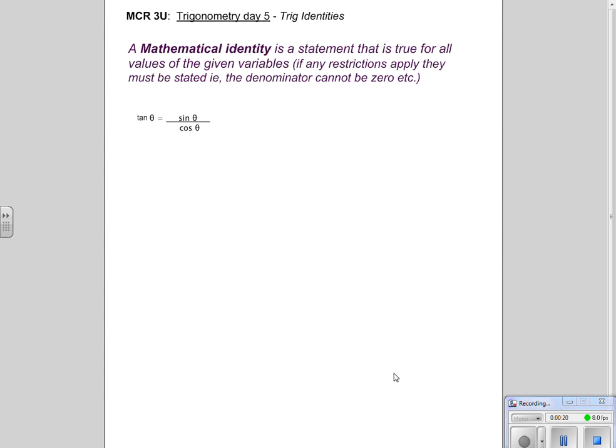A mathematical identity is a statement that is true for all values of the given variables, unless there's any restrictions and you would state those. So we want to look at this identity, tan theta equals sine theta over cos theta.